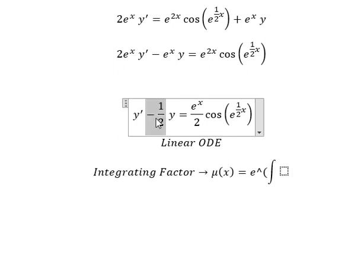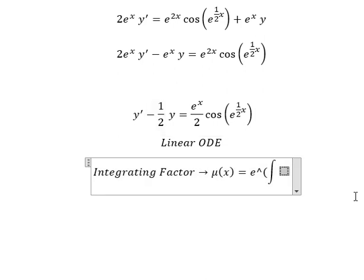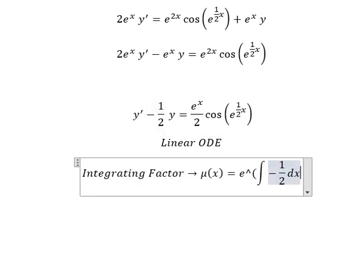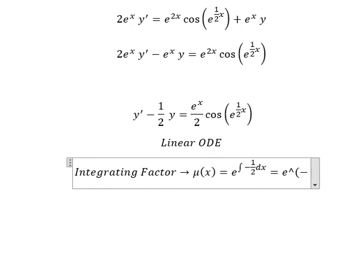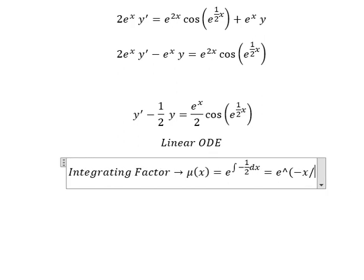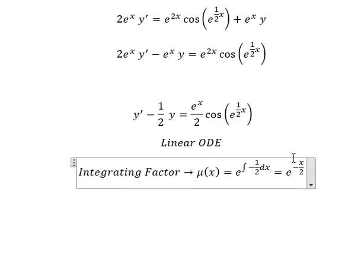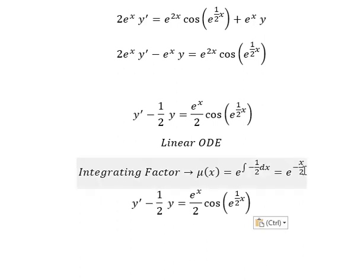We see that negative one over two is next to y — this is for the integrating factor. And we have negative s over two, which means we need to multiply both sides by this integrating factor.